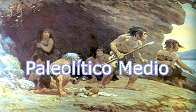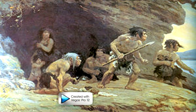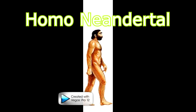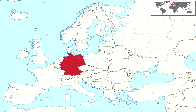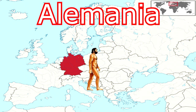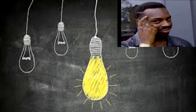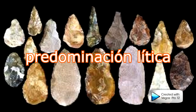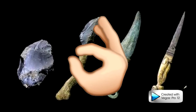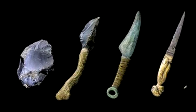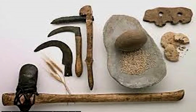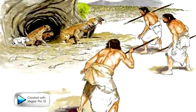El Paleolítico Medio es el segundo periodo de la prehistoria. Inicialmente, el Paleolítico Medio fue definido por la existencia del Homo neanderthal, quien apareció en Europa, en el país de Alemania, hace aproximadamente 150 mil años. Se caracterizó por ser el primer humano pensante, ya que se dedicó a la talla lítica, que era el perfeccionamiento de sus herramientas, haciéndolas más pequeñas y cortopunzantes a base de piedra, como las hachas, puntas de flecha, lanzas y cuchillos. Esto les permitía cazar.